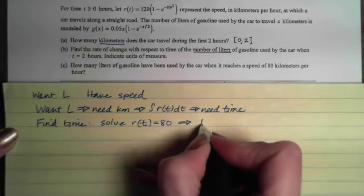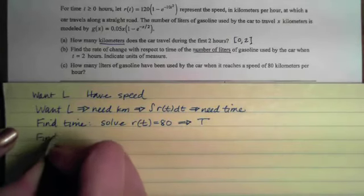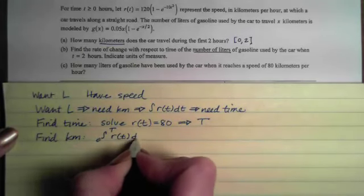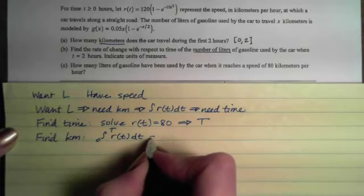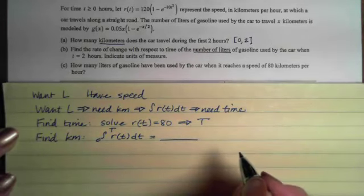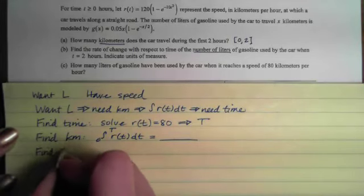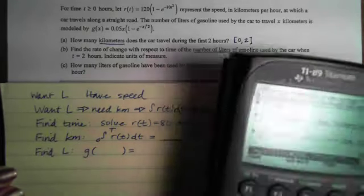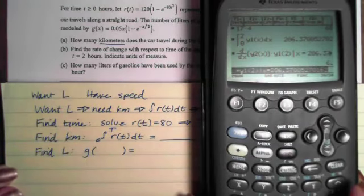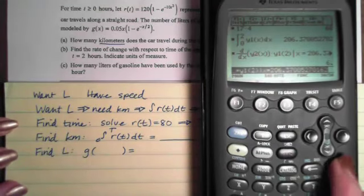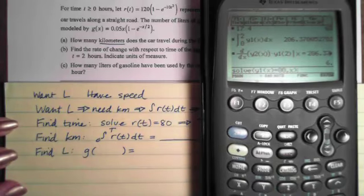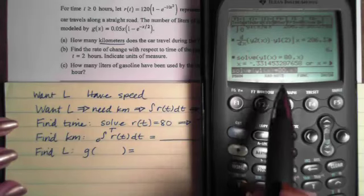Once we have that, then we can find the kilometers that we have traveled in that amount of time by doing the accumulation from 0 up to t on that speed function. Then once we have this, that will be the distance that we have traveled that we will then plug into g in order to find the liters. So let's walk through this on the calculator. Again, I still have y1 is my r and y2 is my g. So I'm going to clear this, go to F2 and solve for when y1(x) equals 80. I'll solve that with respect to x with the diamond, enter.